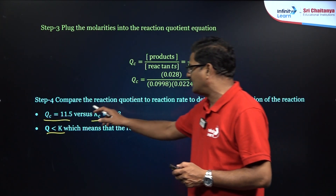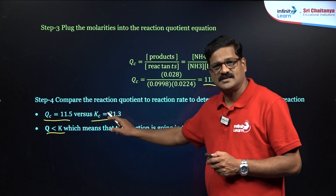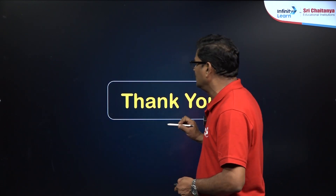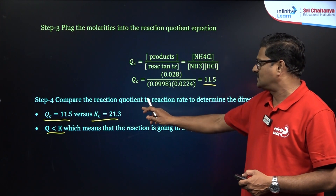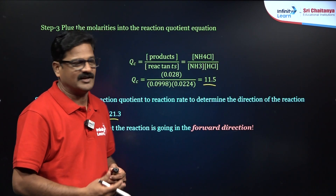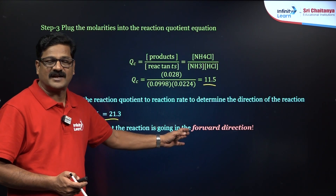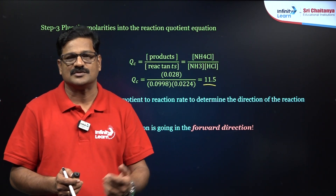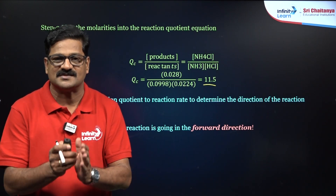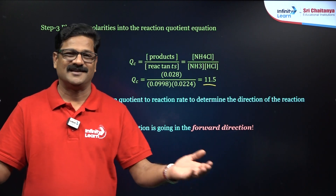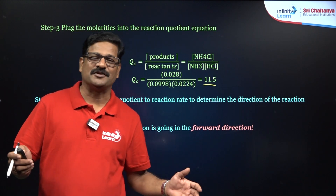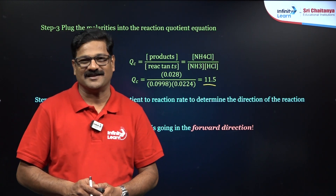QC = 11.5 (calculated) and KC = 21.3 (given). Since KC is greater than QC, the reaction favors the forward direction — that is the inference. In NEET examinations, you may be asked for the direction of the equilibrium. Apply these four steps, solve the numerical, and you can grab four marks. Hope you liked this session — please like, share with your friends, and subscribe to the Infinity Learn YouTube channel. Thank you.